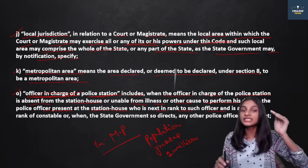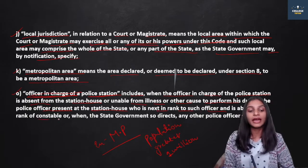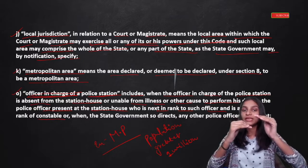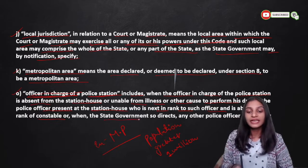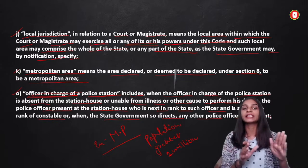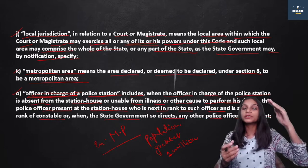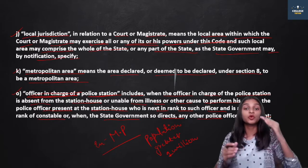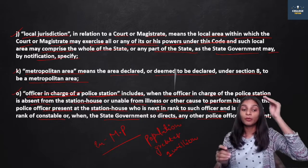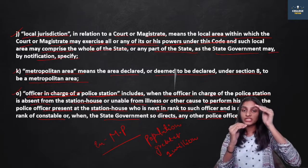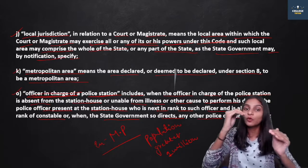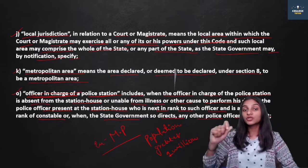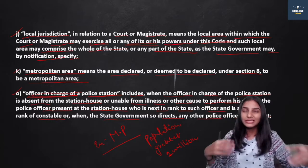The officer next in rank is in charge when the officer in charge is absent. The state government will direct which person will be the officer in charge. So basically, the officer in charge will be determined by the rank at the police station. When the officer in charge is absent or unable to perform his duty in any way, the next ranked officer will continue.